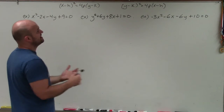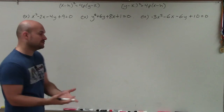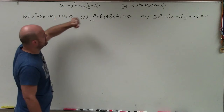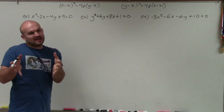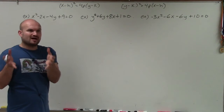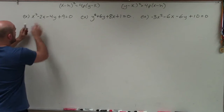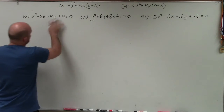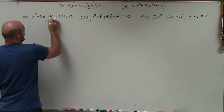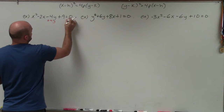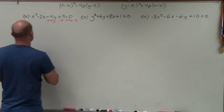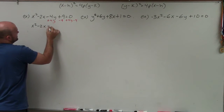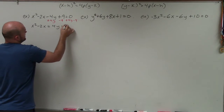So by completing the square, we can then identify h, k, and the value of p. First, notice that I have x's on one side and y's on the other. I want to isolate the values I'll use for completing the square on one side. I'll keep the x's and move y and the constant 9 to the other side by adding 4y and subtracting 9 on both sides. I now obtain: x² − 2x = 4y − 9.